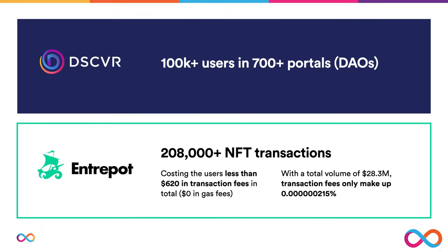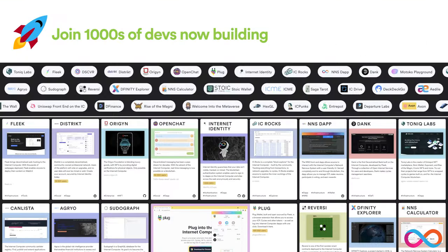A couple of other projects to draw your attention to: one's called Discover, which has more than 100,000 users and more than 700 portals created. Another one called Entrepot has hosted more than 200,000 NFT transactions — and what's really remarkable is that despite hosting so many NFT transactions, it's only cost Entrepot $620 in transaction fees, which speaks to the efficiency of the Internet Computer. We want you to join thousands of other devs now building dApps and services on the Internet Computer and join this movement to realize Web3.